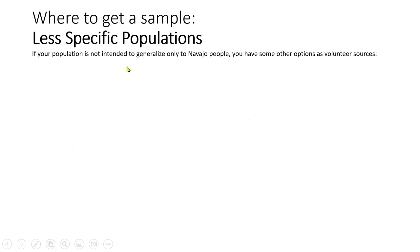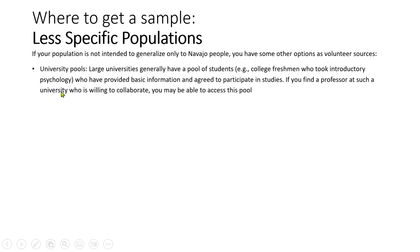If your populations are more general — not intending to generalize only to Navajo people — one way to get random participants is through university research pools. Everyone who takes intro to psych often agrees to participate in studies and provides certain screening data. You could possibly access that pool if you knew a collaborator there — for example, I have collaborators at a couple of different universities and maybe I could get you a sample.